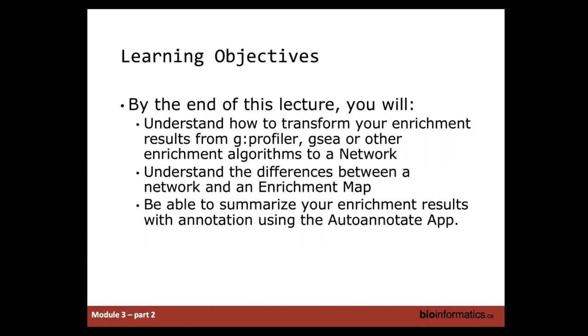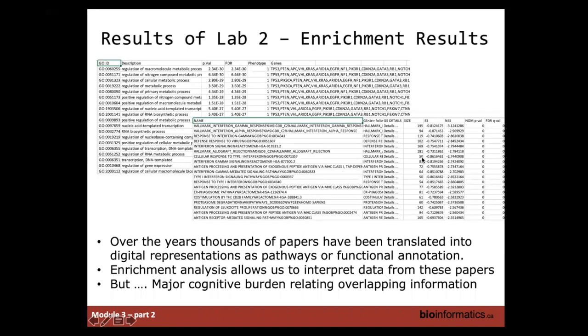You'll understand the differences between a general network and an enrichment map, and you'll be able to summarize your enrichment results using apps such as AutoAnnotate — an amalgamation of ClusterMaker, WordCloud, and AutoAnnotate. This morning we generated enrichment results from GSEA and G:Profiler, which produced beautiful spreadsheets — but how does a huge list of pathways help us understand what genes are enriched? It's a huge list that nobody wants to go through. So how do we translate these results into something we can use more efficiently?